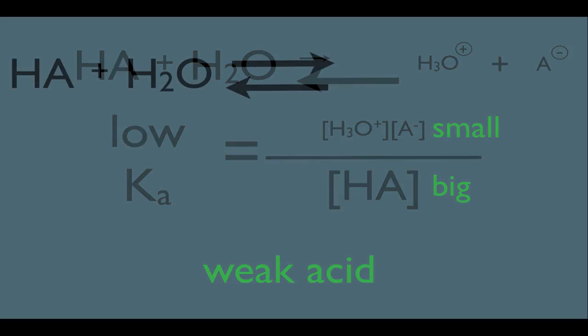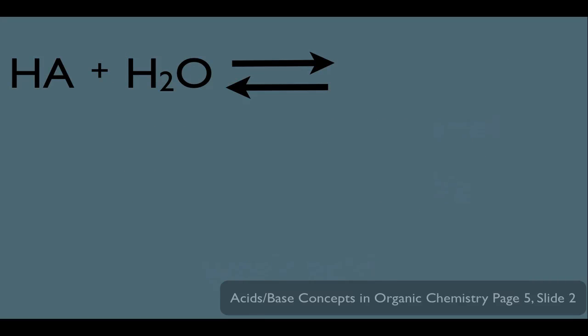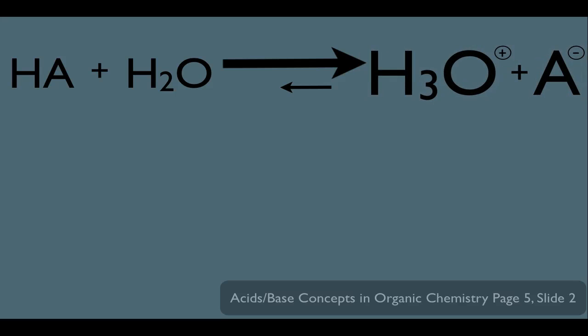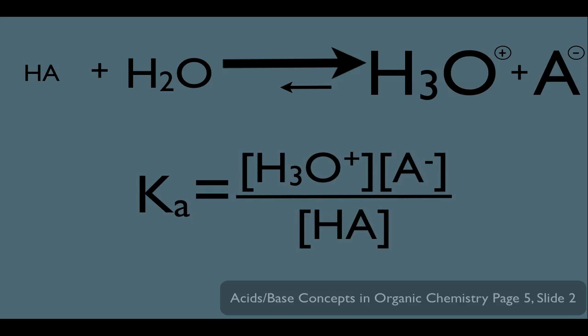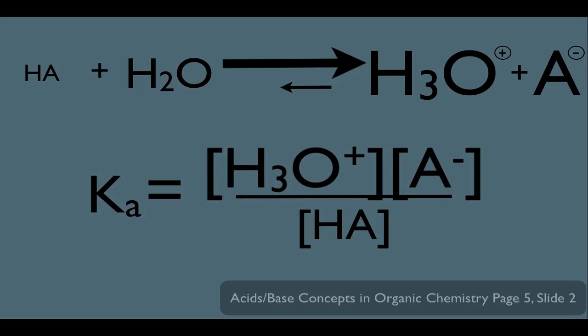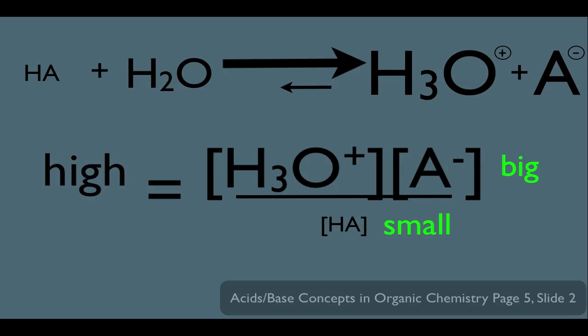So let's look at another situation here. Let's say we have another acid that we're putting in water here, but in this particular case, the reaction is very favored to go to the right, which means we get a lot of H3O+ and a lot of A-. This in turn means our HA amount is going to be very small. Notice what this would do to the Ka value. In this case, we have more product concentration than we have reactant concentration. So of course, now we have a big number being divided by a smaller number, which means the Ka in this case is going to be high.